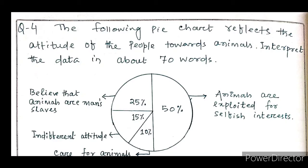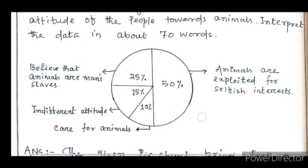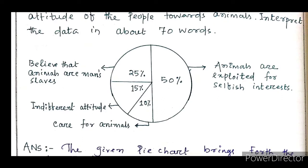The pie chart shows what kind of attitude or behavior people have towards animals — whether people are concerned or indifferent. We need to keep in mind to write the answer in about 70 words and interpret the pie chart. The data shows that 50% of people thought that animals are exploited for selfish interest.